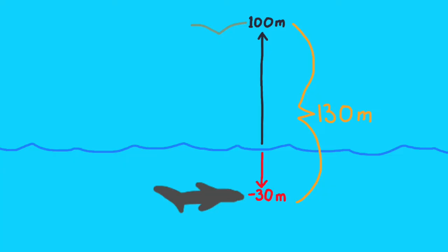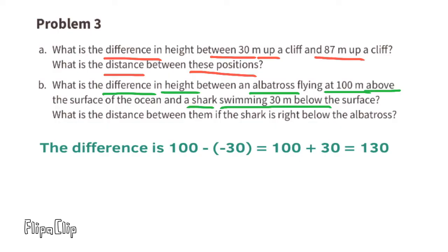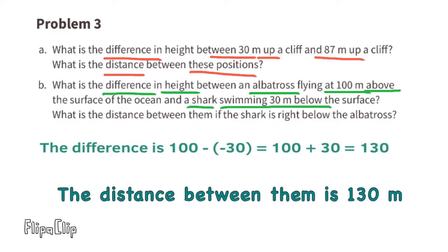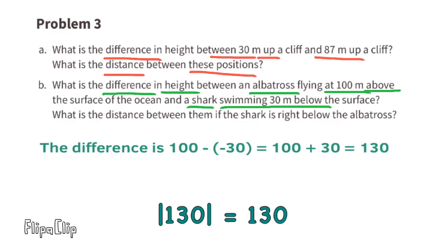This illustration shows a clear picture that the distance between the albatross and the shark is 130 meters. The difference in height is 130 meters because 100 minus negative 30 is the same as 100 plus the opposite of negative 30, and the opposite of negative 30 is positive 30, so 100 plus 30 equals 130. The distance between them is 130 meters, because the absolute value of 130 is 130.